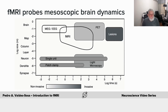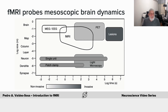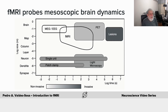Here we have a famous diagram showing in a logarithmic scale the spatial and temporal resolution, as well as the invasiveness of different methods. We see that fMRI occupies a unique position — it's not as fast as MEG or EEG, but it certainly has more spatial resolution and can reach down to distinguish activity at the level of columns or layers.